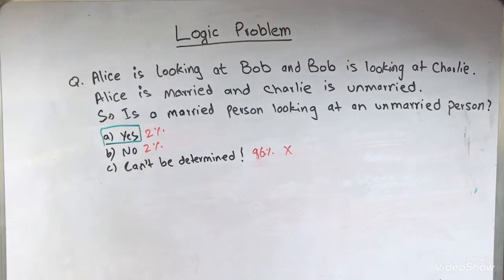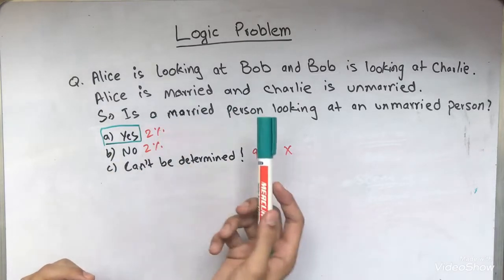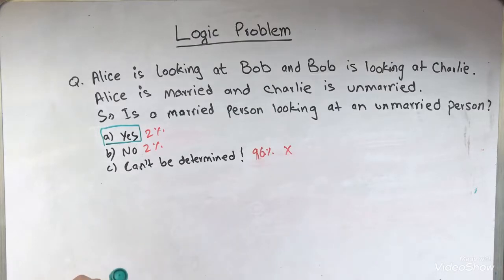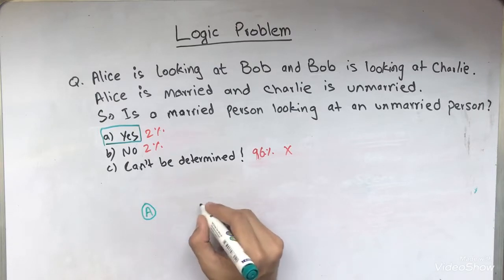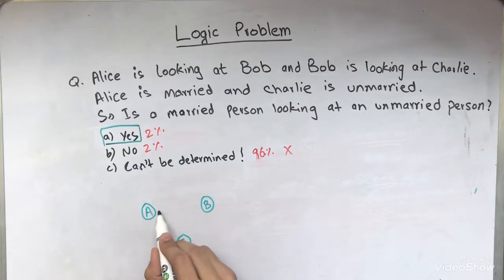So let me explain how. Alice is looking at Bob and Bob is looking at Charlie. First of all, we're going to depict the situation in a pictorial form. So I'm going to represent Alice with A in a circle, Bob with a B in a circle and Charlie with a C in a circle and arrows to represent where they're looking at. So Alice is looking at Bob and Bob is looking at Charlie.